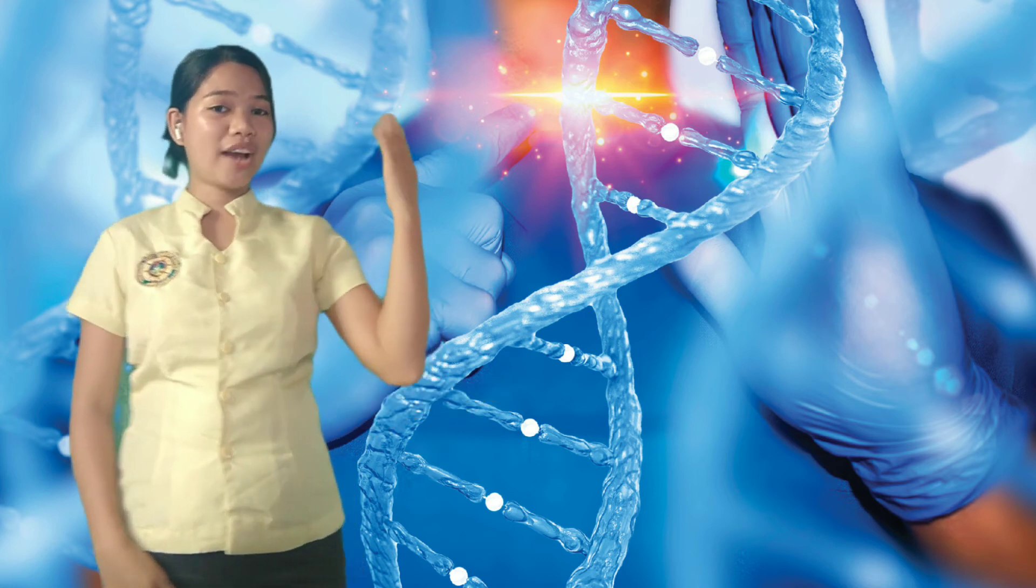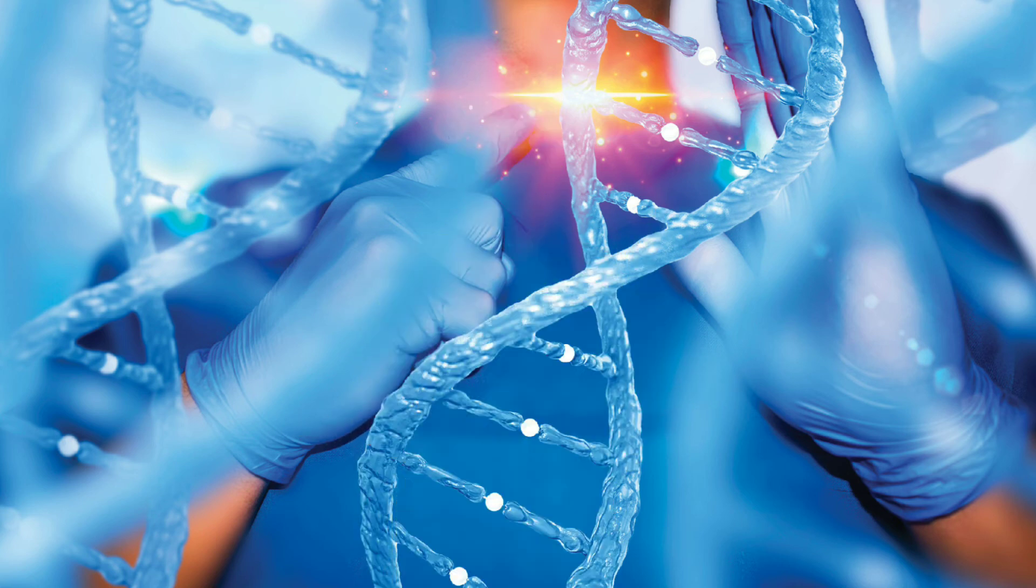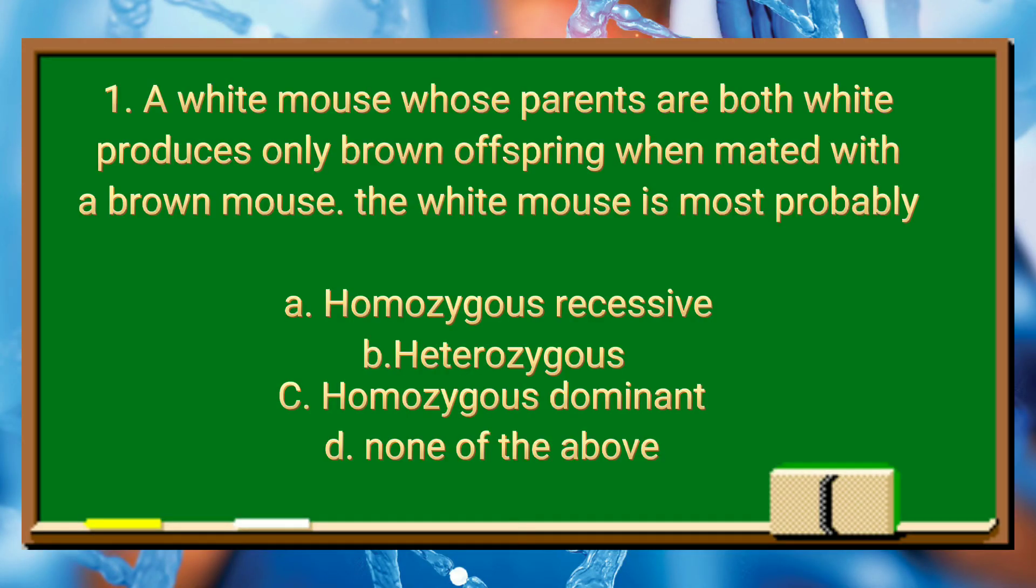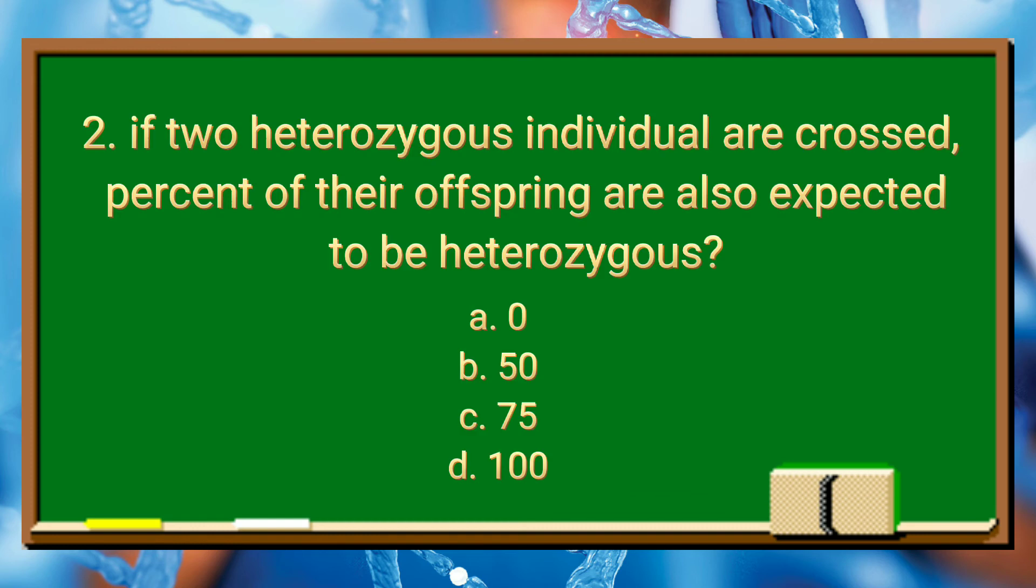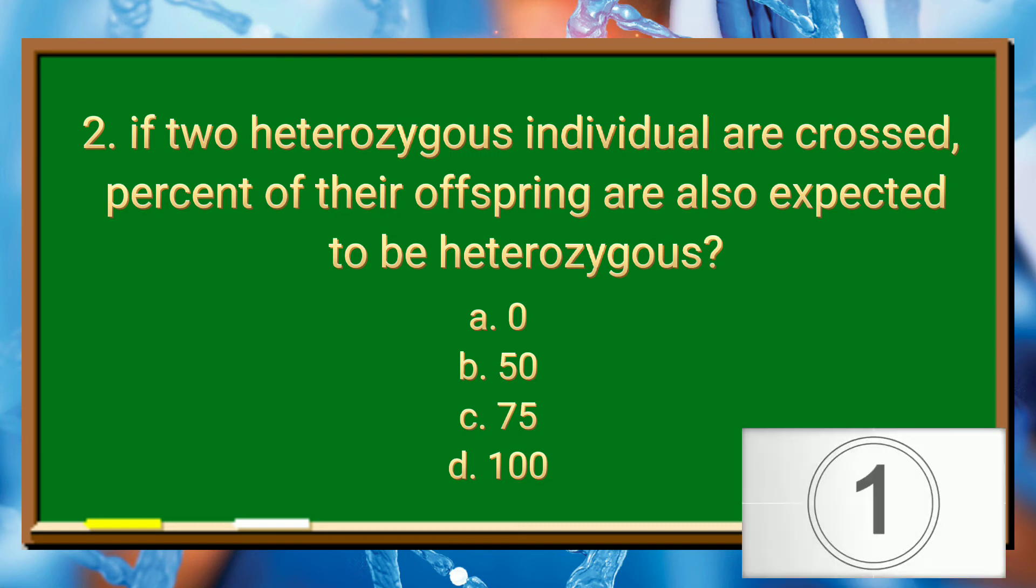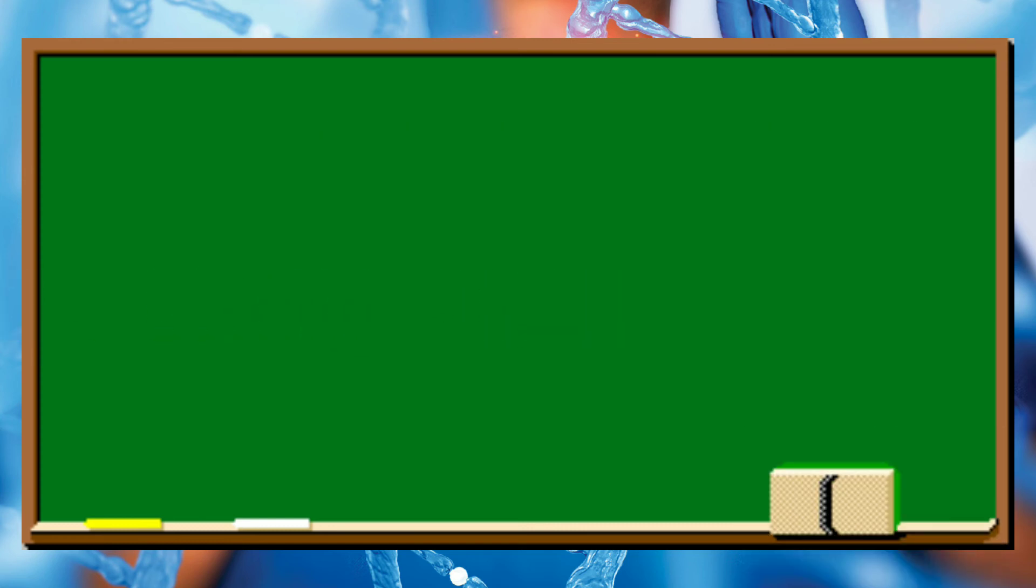Now, I want you all to get a paper and a pen and try to answer this. A white mouse whose parents are both white produces only brown offspring when mated with a brown mouse. The white mouse is most probably homozygous recessive. If two heterozygous individuals are crossed, what percent of their offspring are also expected to be heterozygous? 50%.